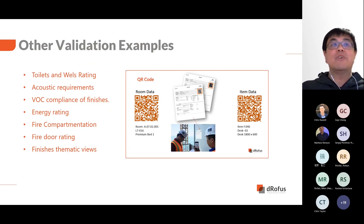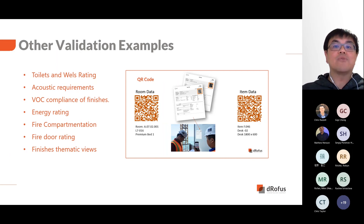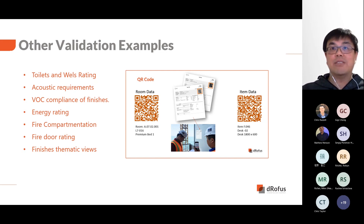The GPO versus equipment requiring power example is one of many for the room data item data check. Others would include WELs rating for toilets and acoustic levels for compliance. Here are a list of other examples of validations you can carry out on your project in terms of rooms and item-based validations.